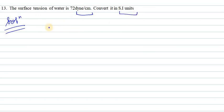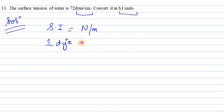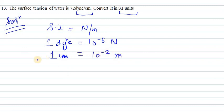The SI unit for surface tension is Newton per meter. So we need to convert dyne into Newton and centimeter into meter. 1 dyne is equal to 10 raised to the power minus 5 Newton, whereas 1 centimeter equals 10 raised to the power minus 2 meter. Now we need to convert the value of 72 dyne per centimeter.